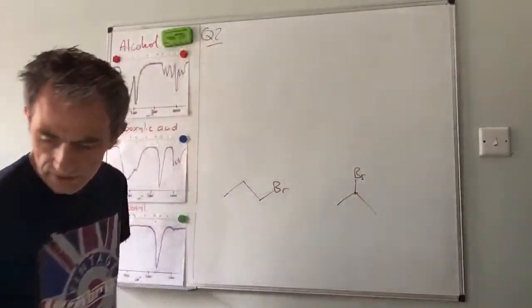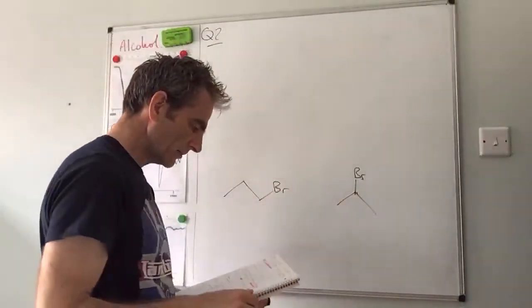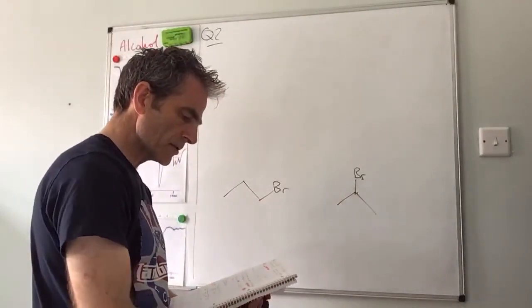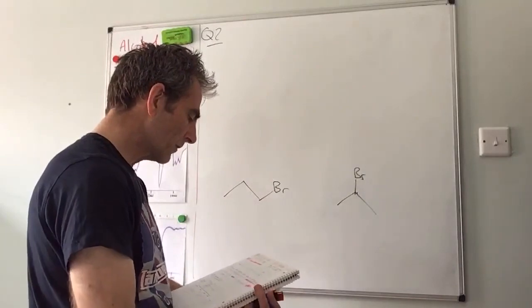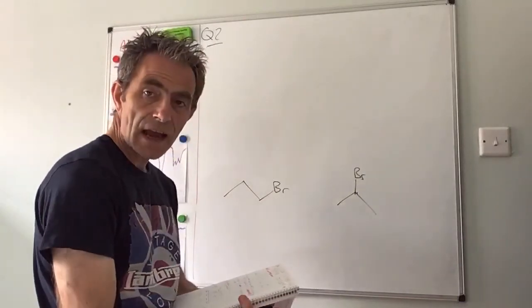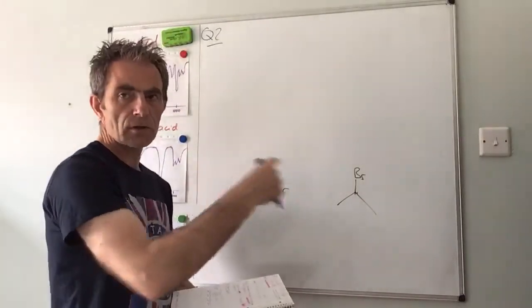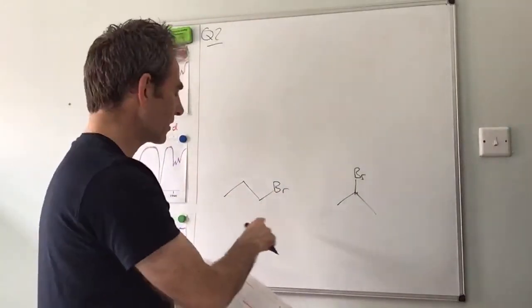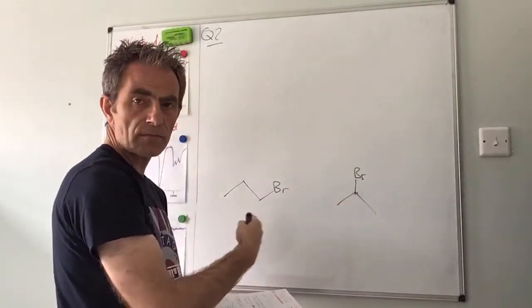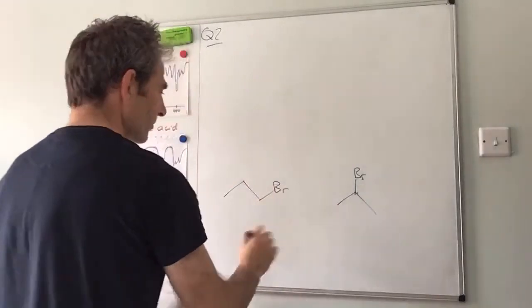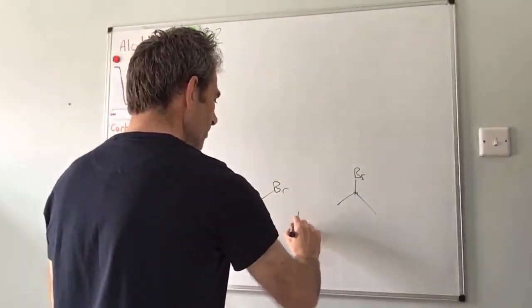Right, so this is the next part of the question. It says the isomers from part A were heated under reflux with aqueous sodium hydroxide to form two compounds E and F. And it was really good to see students showing me the logic, so they were saying that reaction would cause these to become alcohols.